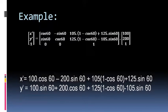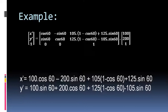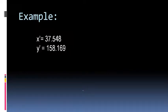By substituting these values into the composite matrix, we replace theta with 60°, h and k with 105 and 125, and x and y with 100 and 200. Writing this in matrix form and using a calculator to evaluate the result, we get x' = 37.548 and y' = 158.169.